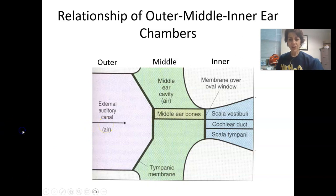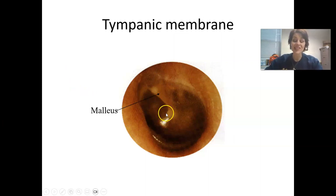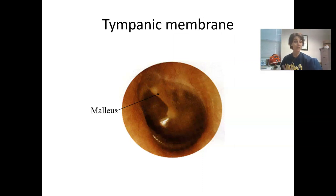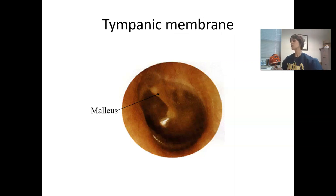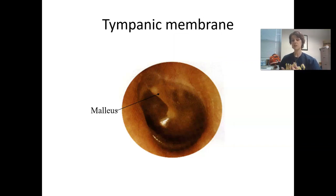With respect to the tympanic membrane, here is an actual view of it — you can actually see the malleus attached just behind that membrane. The tympanic membrane can develop holes or ruptures, which usually happen when you have pressure building inside the eustachian tubes, which connect the middle ear to the throat. This usually happens due to something like an ear infection, or a sinus infection or cold, and then you get on a plane and those pressure changes cause problems with the eustachian tubes. Because it's basically like skin, it does heal, though it takes a while.